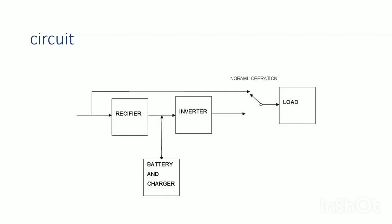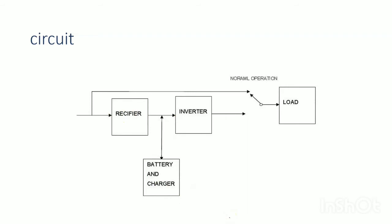In offline UPS, normally the load is directly connected via the main supply path. Only when the main supply fails does the rectifier-inverter path provide power to the load. When the main supply is present, the battery gets charged through the rectifier path, and electric power is provided directly from the main supply to the load.